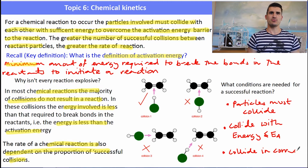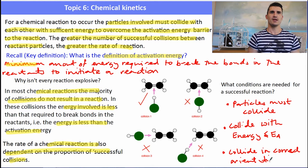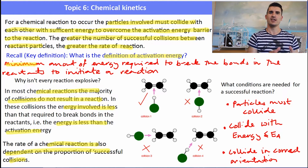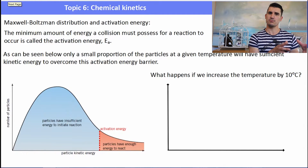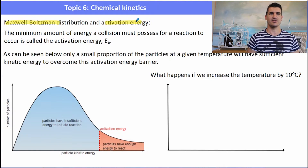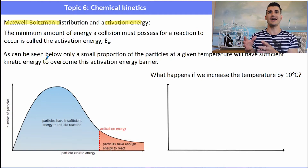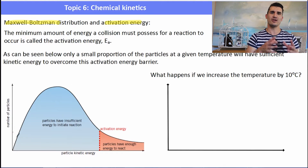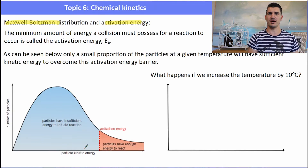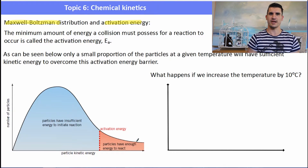The Maxwell-Boltzmann distribution shows the distribution of kinetic energy proportional to the Kelvin temperature. With a fairly high activation energy, a large proportion of molecules don't have enough energy to overcome it — only a small proportion can collide and react to form products. The average kinetic energy is always at the top of the peak, and on average a large number of particles would not be able to form a reaction; only a small number would.